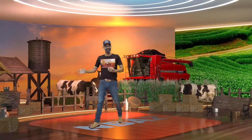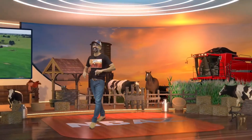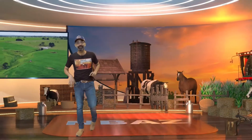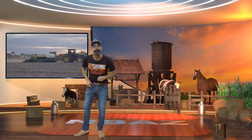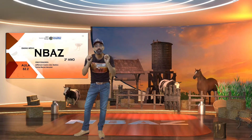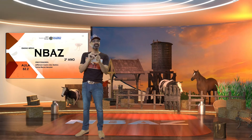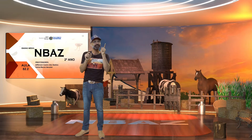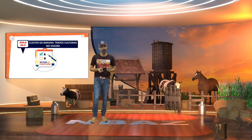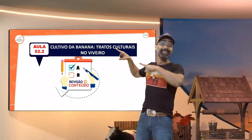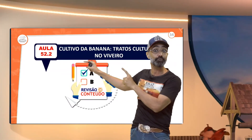Muito bem, meus queridos, estamos de volta para fazer esse bate-bola, jogo rápido. Essa aula foi tensa, não foi? Muitas coisinhas para a gente verificar lá. Na aula nós falamos sobre escolha das mudas no local definitivo. São muitas informações, são características muito próximas, temos que ficar atentos. Então vamos fazer essa revisão da nossa aula 52.2 — estamos fazendo a revisão da aula 52.1.